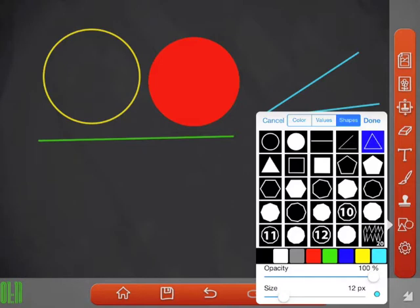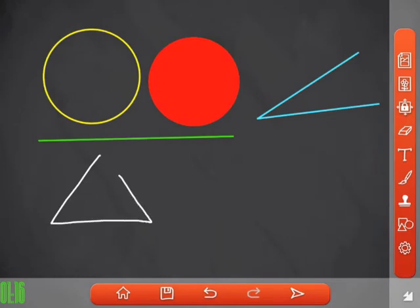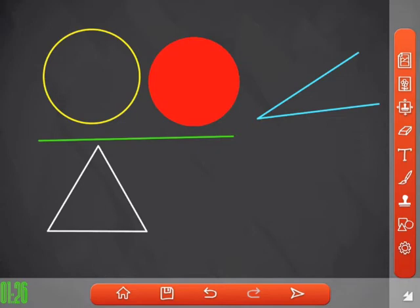Now the next one, let's pick a triangle. Let's pick a white color here. You can draw this almost like a perfect triangle. You can adjust that any way you want to, move the sides, move the vertex, whatever you want.